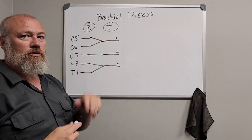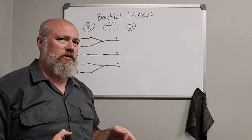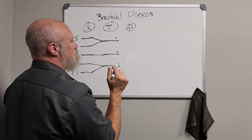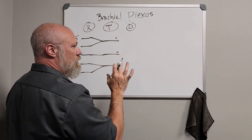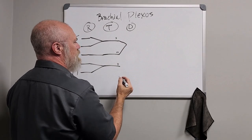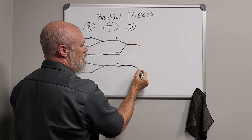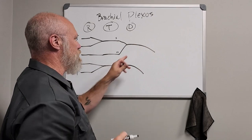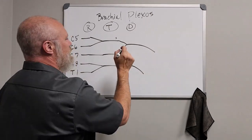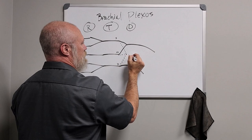The trunks are going to divide into divisions — anterior and posterior — based on how they're structured in the frontal plane. The anterior divisions of the superior and middle trunks are going to come together, while the anterior division of the inferior trunk continues on its own. The posterior divisions of all three trunks are going to join together.